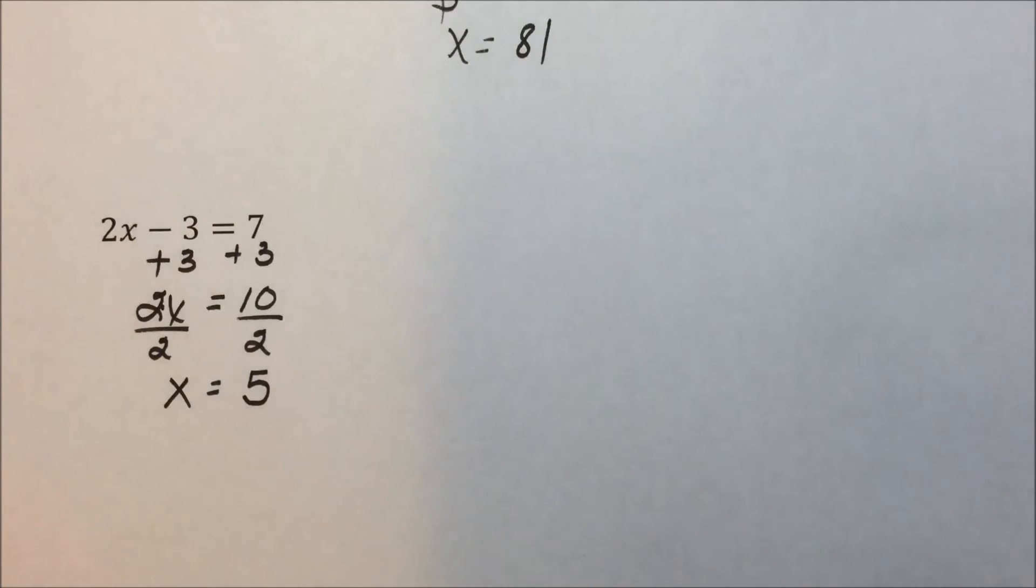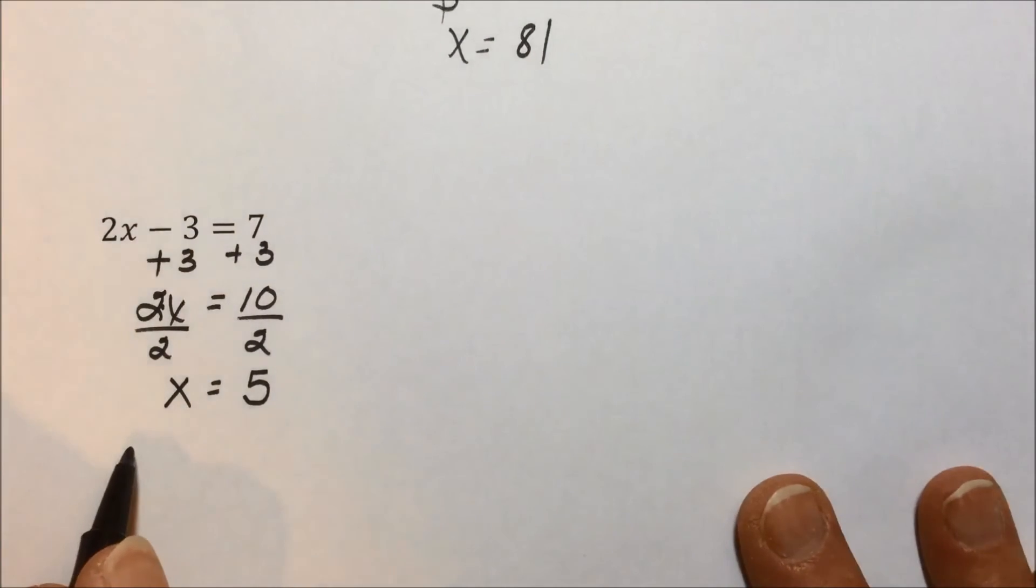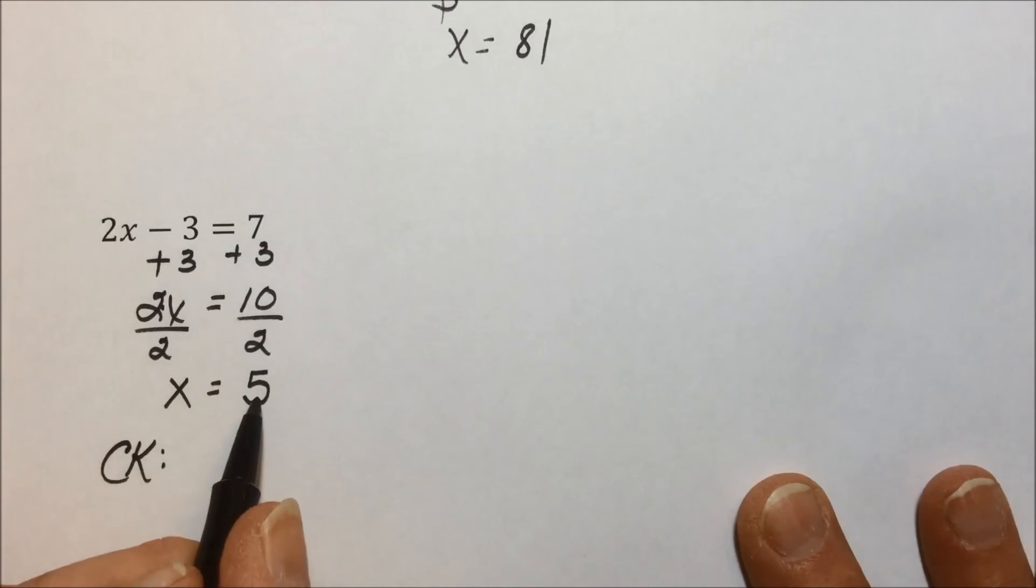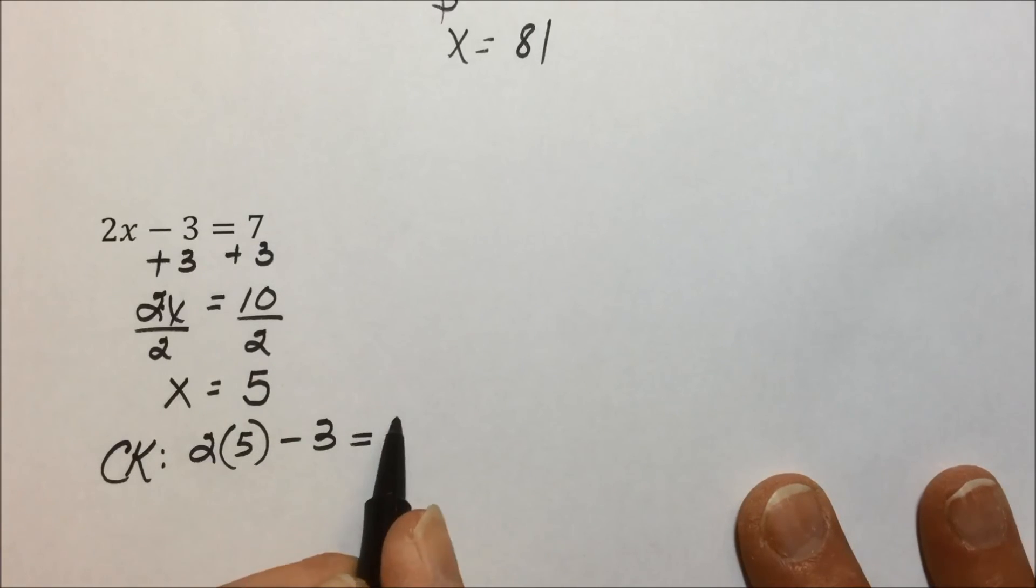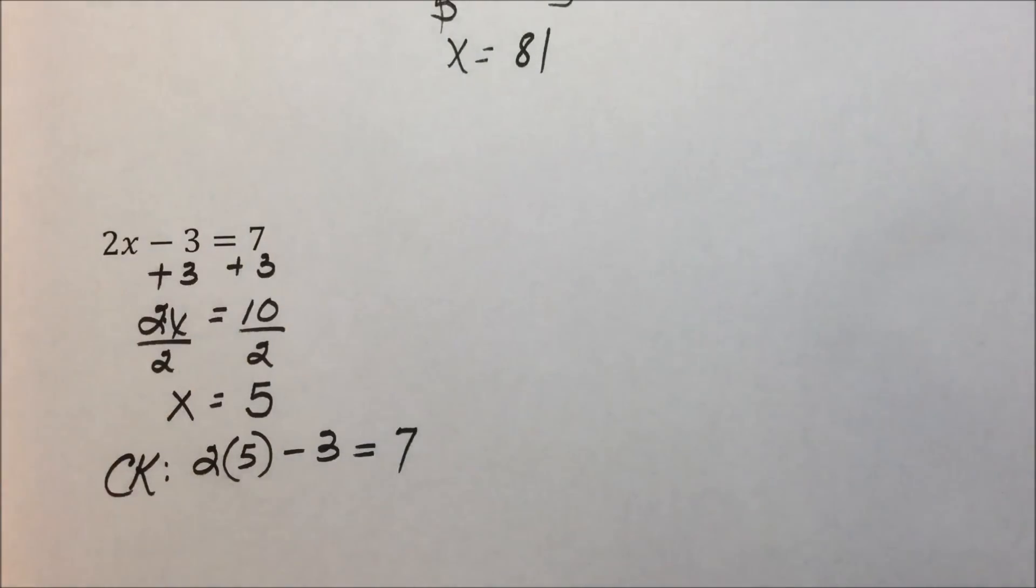And again, it's always a good idea to verify that you have the correct solution. So plugging in a 5 in place of x, we have 2 times 5, which would be 10 minus 3, does in fact give us 7. So we can be satisfied that we solved this correctly.